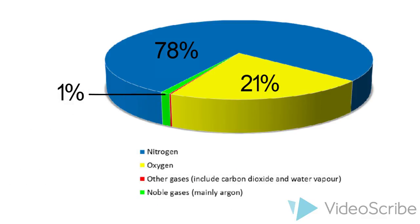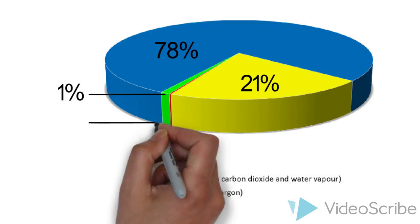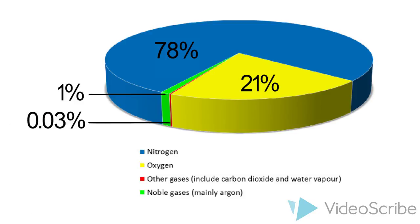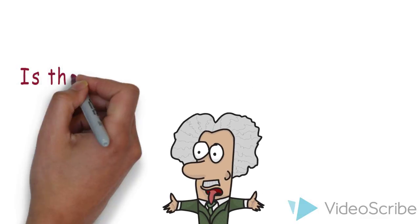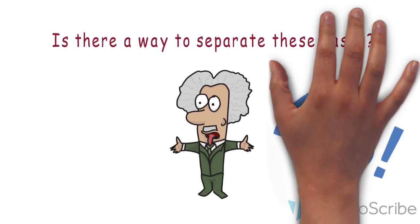Noble gases, which consist mainly of argon, occupies about 1%, whereas other gases such as water vapour and carbon dioxide occupies about 0.03%. So, how do scientists know about these percentage compositions and is there a way to separate these gases? The answer is definitely yes.